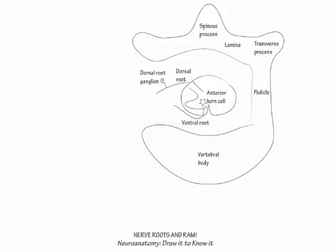Underlying the pedicle is the intervertebral foramen. Within the intervertebral foramen, attach a dorsal root ganglion to the posterior nerve root. The dorsal root ganglion houses the cell bodies of sensory nerves. Sensory cell bodies are called pseudounipolar or bipolar because their axons pass both centrally and peripherally.